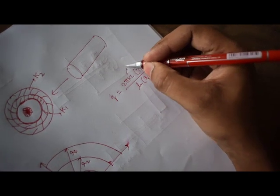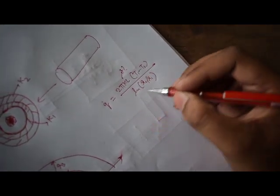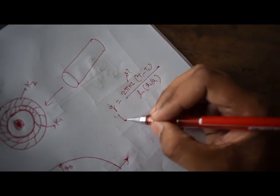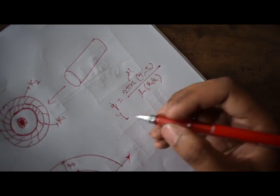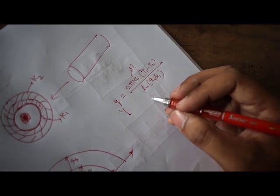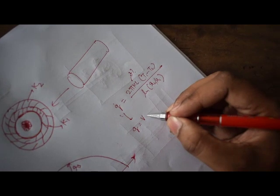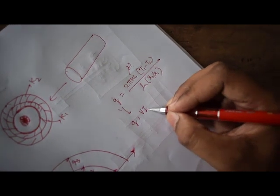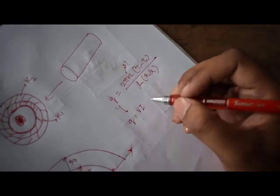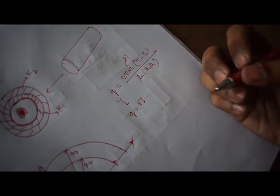We need to find K, which is unknown. We can calculate Q, the heat flux, using the amount of heat we are transferring to the system — that will be equal to voltage times current. So that value of Q we can get from the experiment.